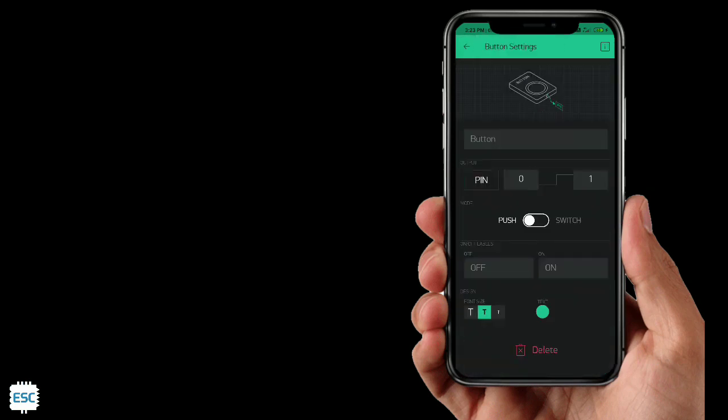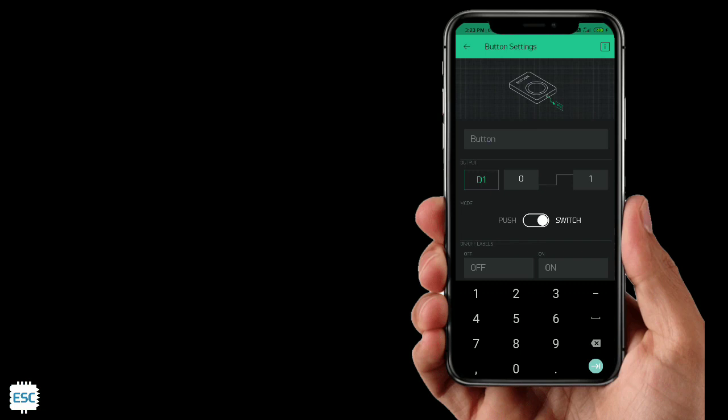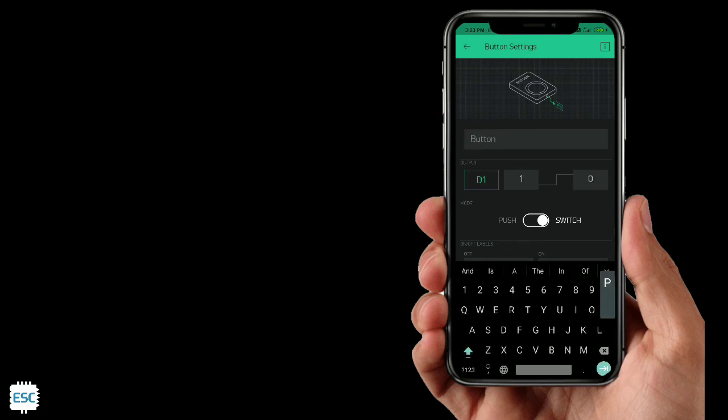Next, add a button and select D1 because we connected the relay module to D1. I gave the name as pump.